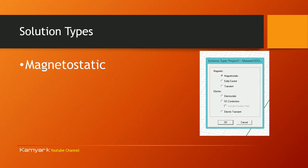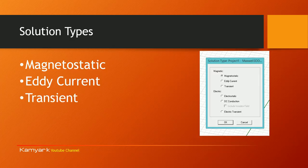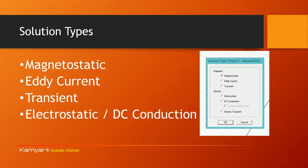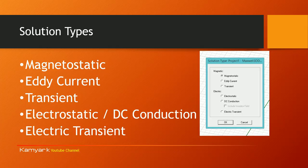You have Magnetostatic, which is basically DC; Eddy Current, which is AC magnetic; and Transient Magnetic, which is a very comprehensive solution where sinusoidal or non-sinusoidal, any kind of time-varying excitation can be applied. On the electric side, we have Electrostatic, DC Conduction — both DC — and Electric Transient, which is somewhat less comprehensive than magnetic transient but still provides a lot of information.